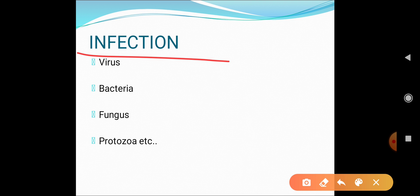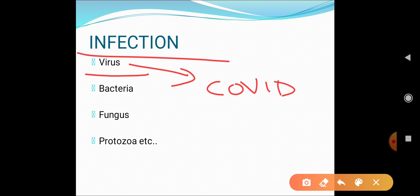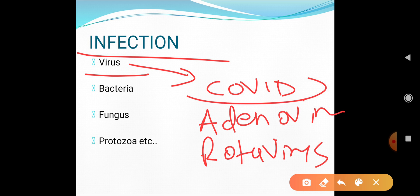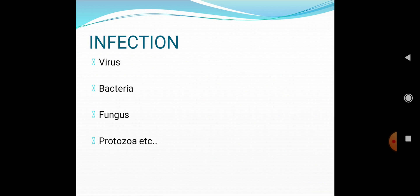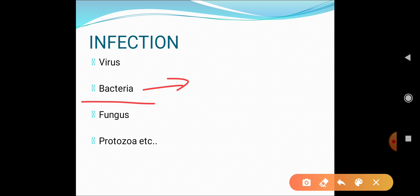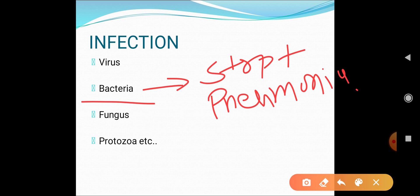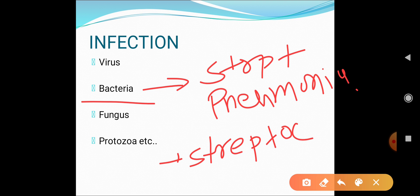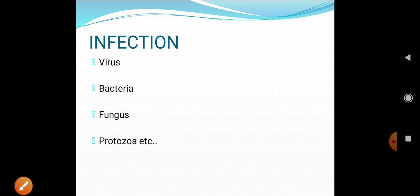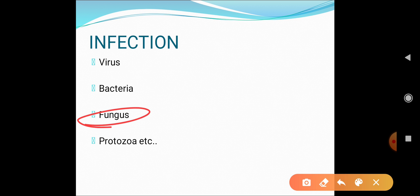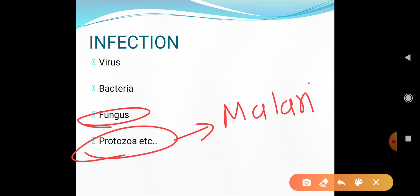The third etiological factor is infection. Any form of infection leads to inflammation and damages capillary endothelium and cells. Viral infections include COVID-19 (coronavirus), adenovirus, and rotavirus. Bacterial infections include Streptococcus pneumoniae causing pneumonia and Streptococcus viridans and group B Streptococci causing pharyngitis. Fungal infections include histoplasmosis, aspergillosis, and Candida. Protozoal infections such as malaria and hookworm can also cause cell injury.